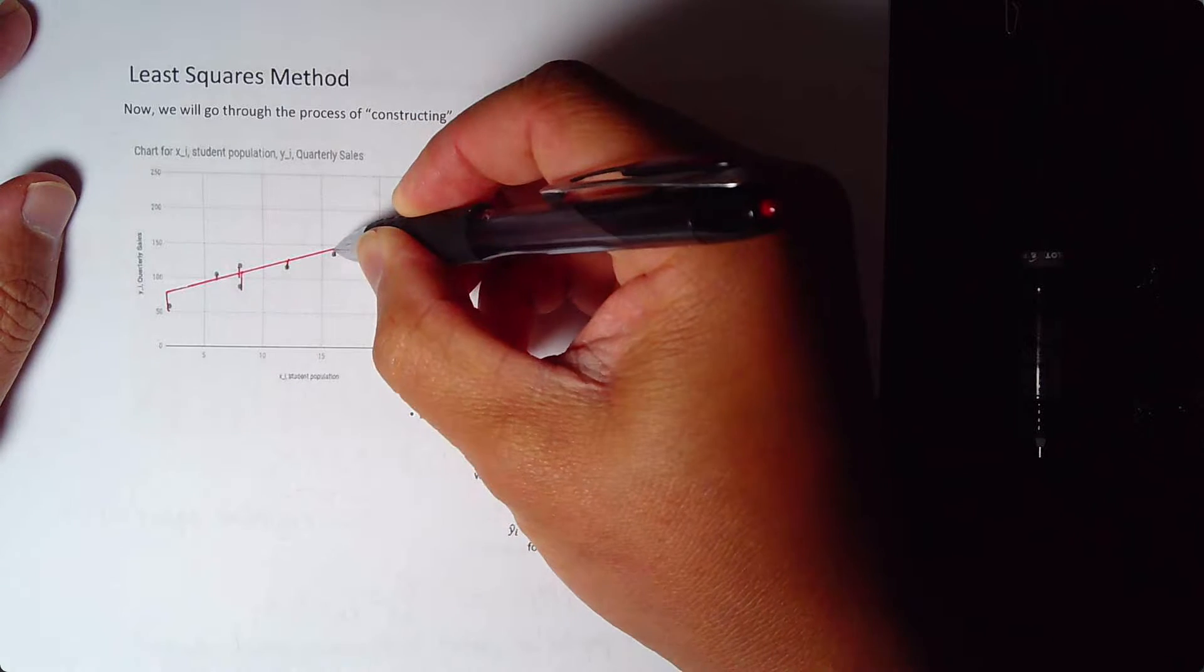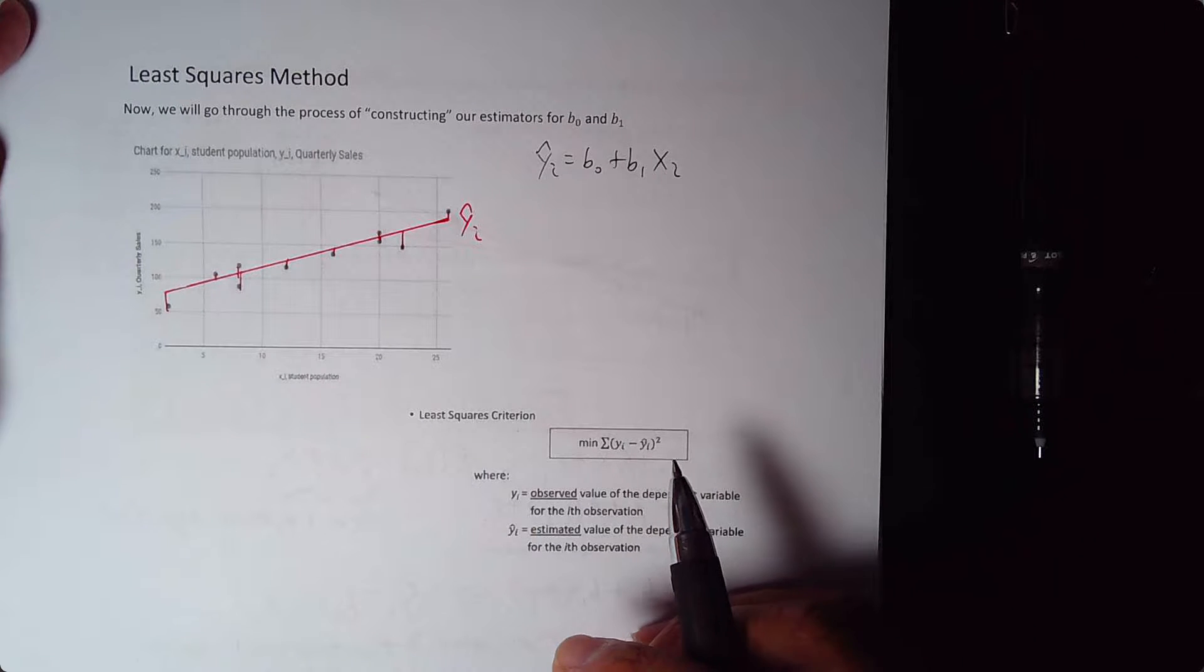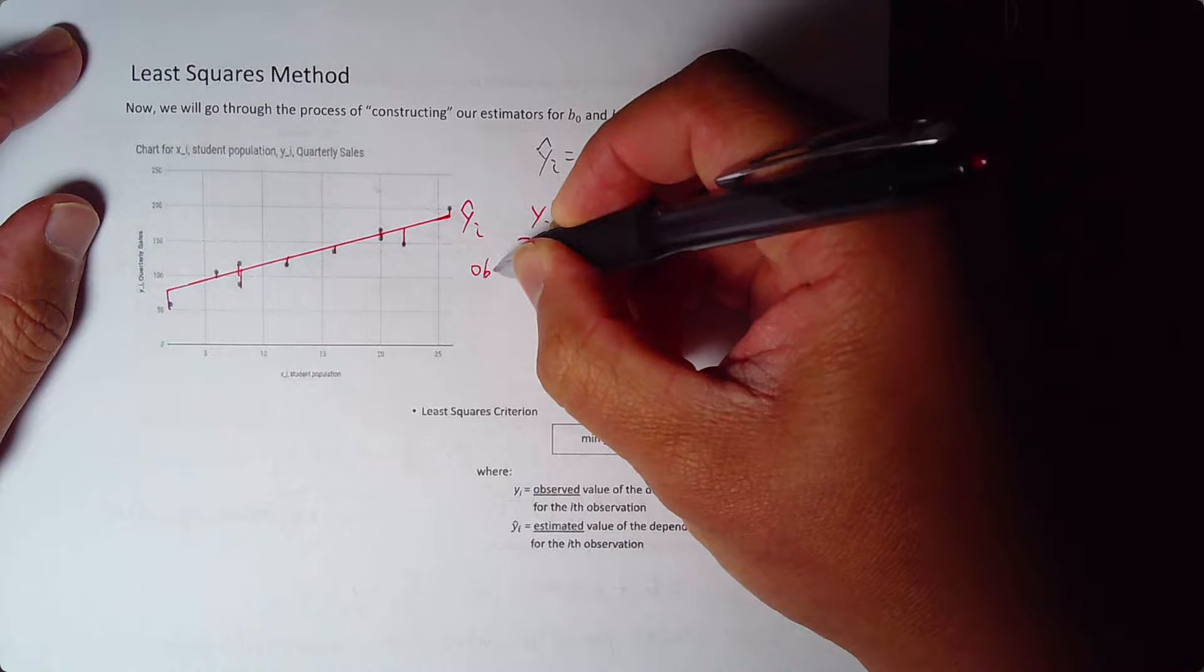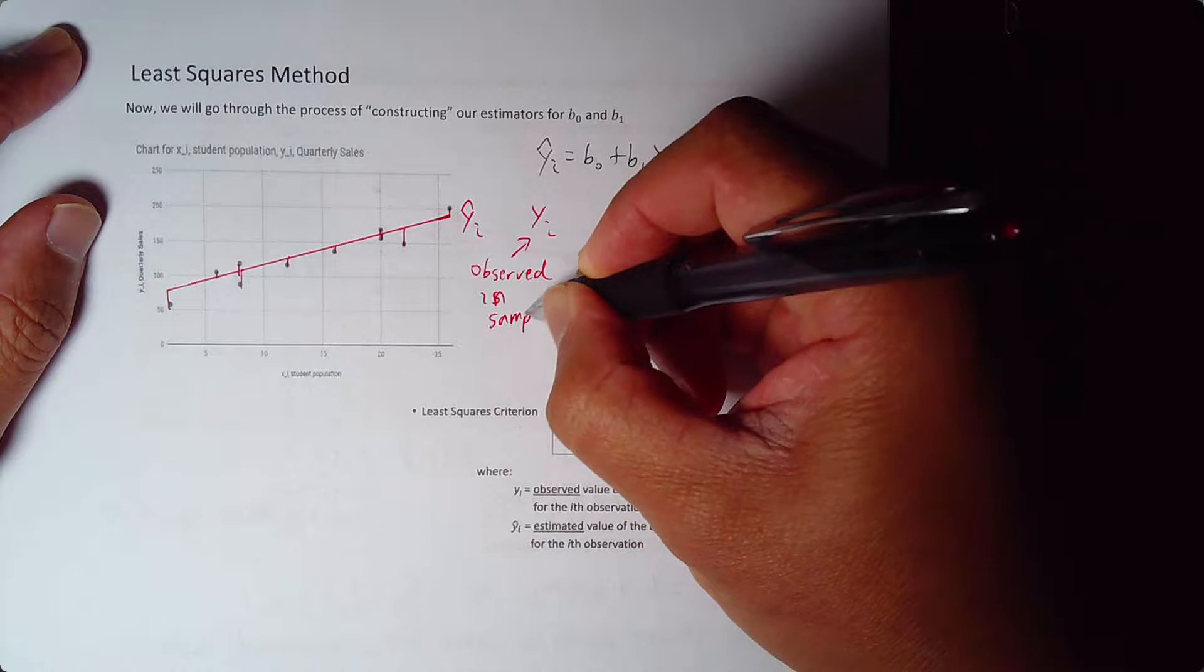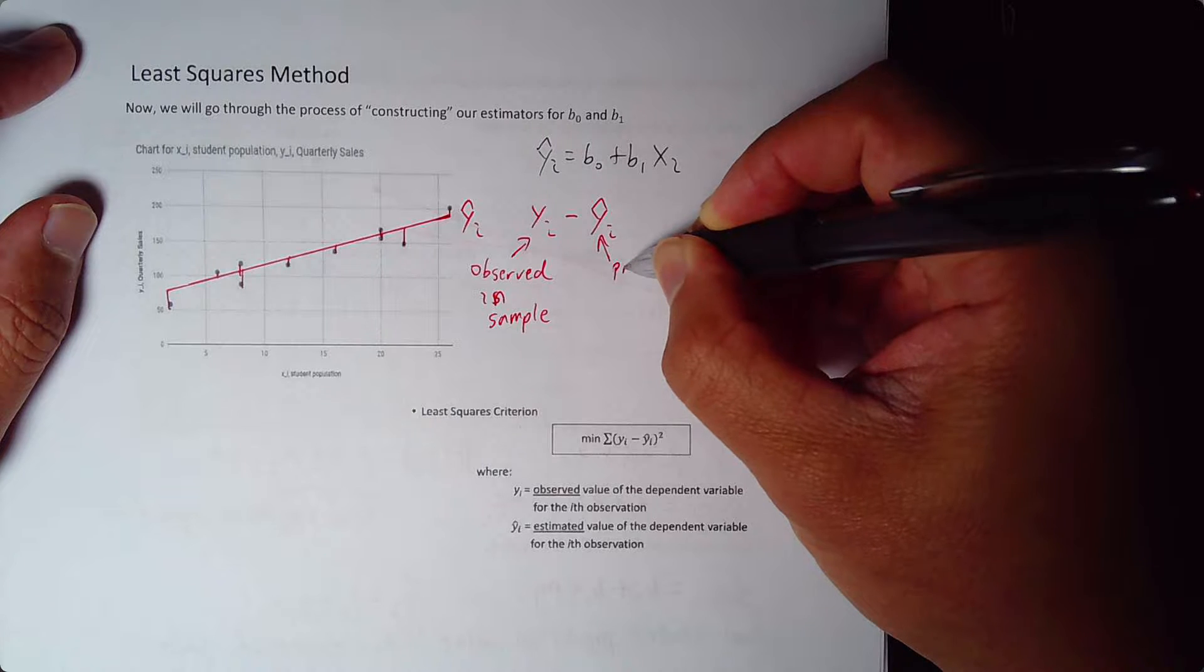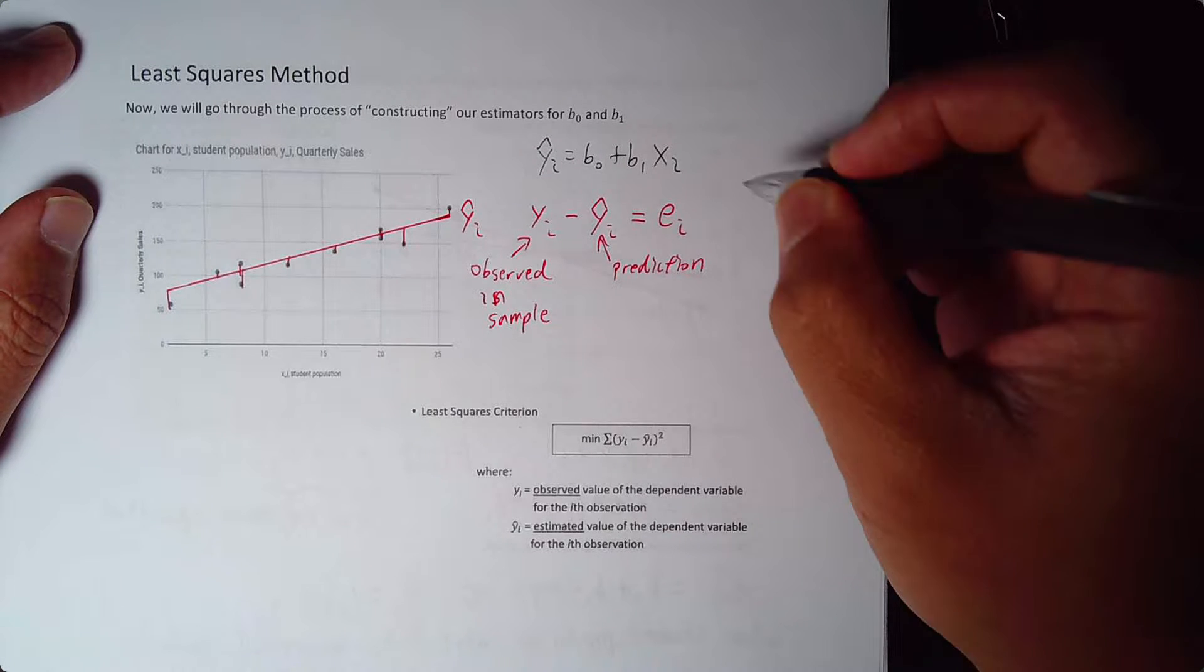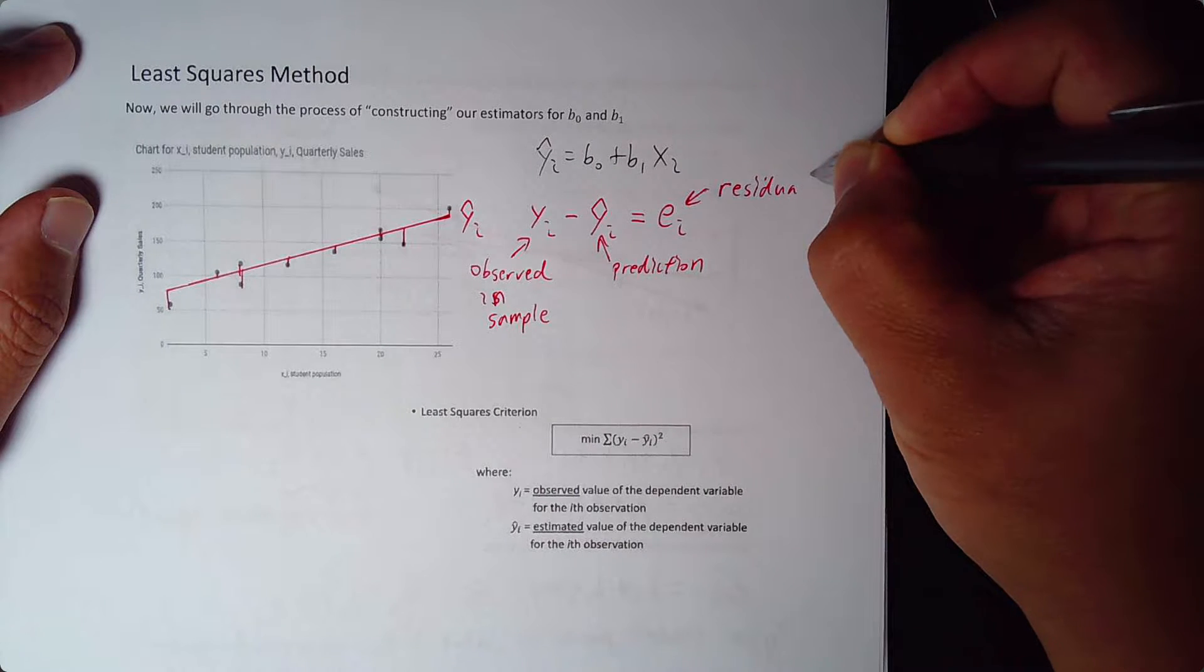Well, one thing I could look at is I want a line that minimizes the distance from every observation that I have. Now remember, this is my sample, and I want to be efficient. So I want to use every observation that I have. So I'm going to take every observation, which is my yi, that is my observed in the sample, and I'm going to subtract it from this y hat, my prediction. And that is going to be, I'm going to call that ei, just a placeholder. I'm going to call this ei, we're going to call it the residual.